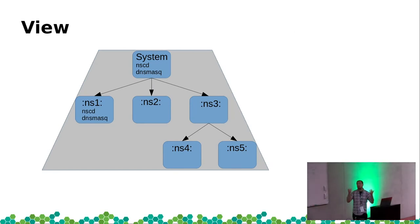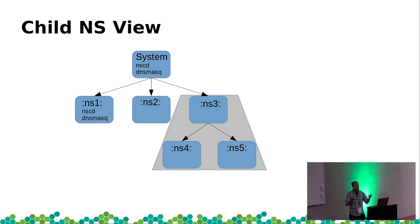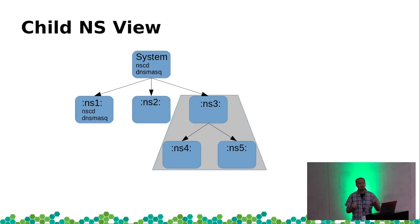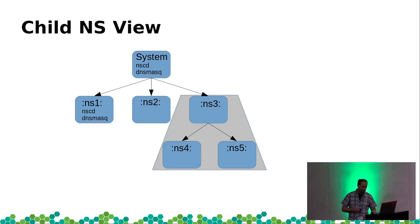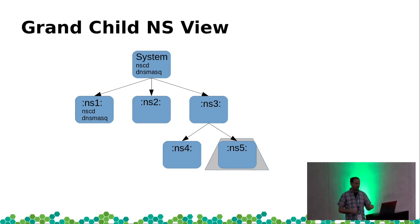A policy namespace also defines a view and where policy can be loaded — who can load policy to where. A task in the system namespace can see all the child namespaces of the system. When we put a task into, say, NS3, it can only see NS3's policy and below — NS3's children. And it can only load policy into NS3 or its children, assuming it has cap_mac_admin. Similarly, we can narrow it down even further with namespace 5.